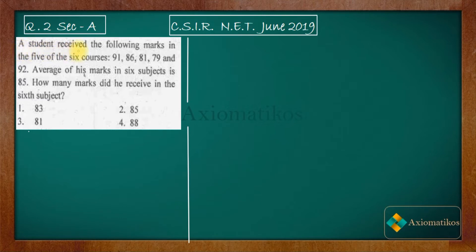A student received the following marks in five of the six courses. We have six courses, out of which marks for five courses are given to us. The average of his marks in the sixth subject is 85. How many marks did he receive in the sixth subject? So it is given to us that the average is 85, and we have to find out the marks of the sixth subject.